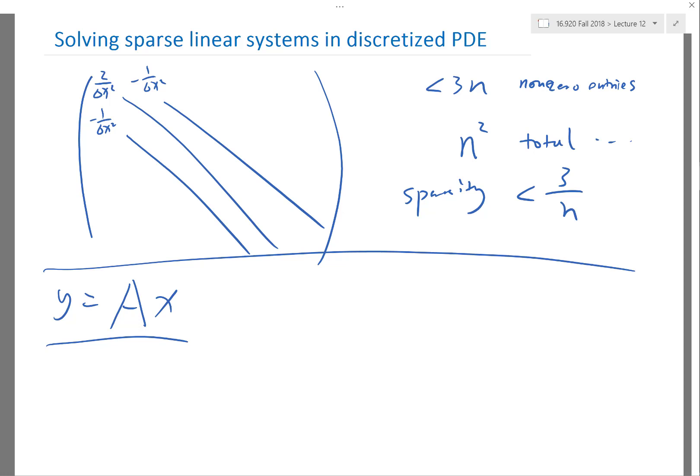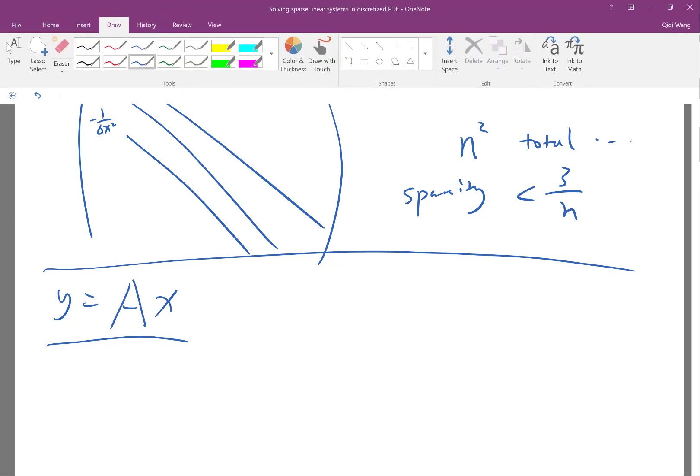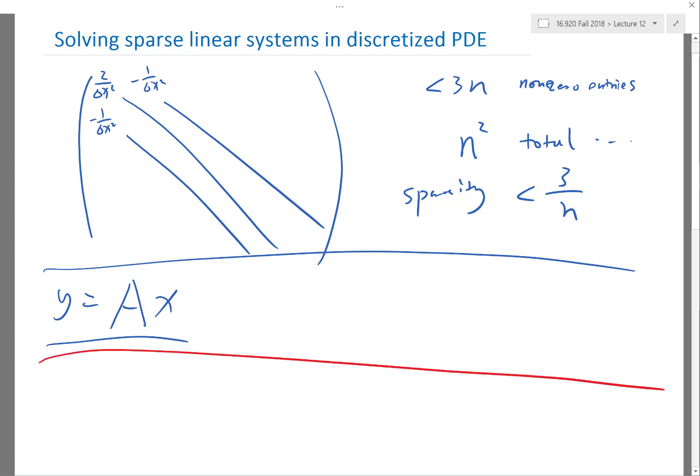Okay, so now the question is: is there a way to solve a linear system by repeatedly just applying y equals Ax? That's actually fundamentally the idea of iterative methods, to just solve the system by applying y equals Ax.